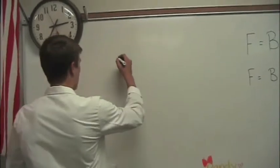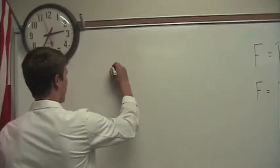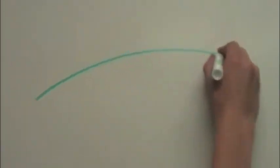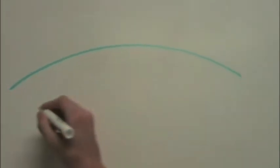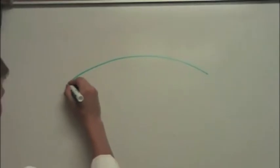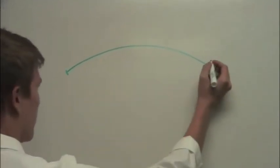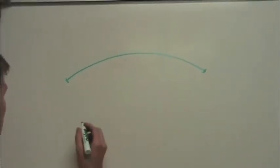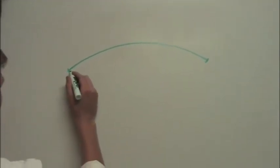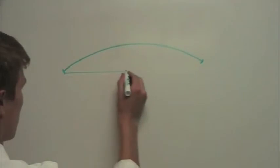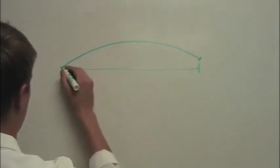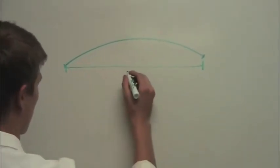The throw is parabolic, so the ball travels in an arc. It is thrown here and hits Alex there. It traveled a distance of approximately 20 meters during the throw.